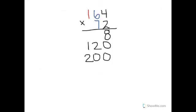Now that we've multiplied the 2 in 72 by all the digits in 164, we now need to multiply the digits by the 7. What we have to keep in mind is that the 7 is in the tens place, so it's equal to 70. Our first step would be 70 times 4, which is 280. Our next number is 6, but don't forget our 6 is in the tens place, so it's now 60 times 70, which is 4,200.